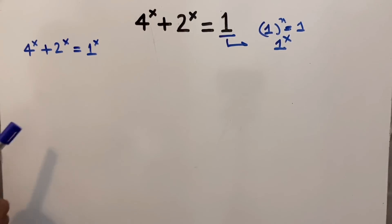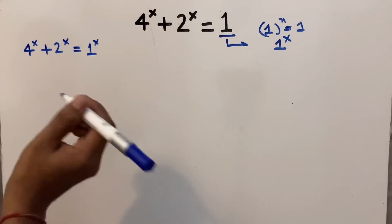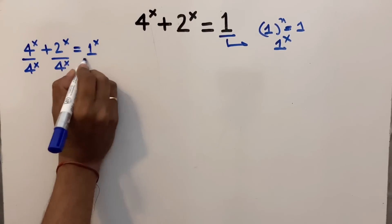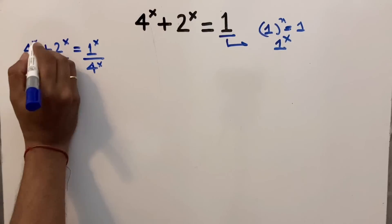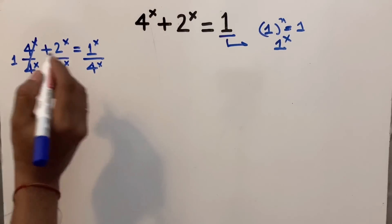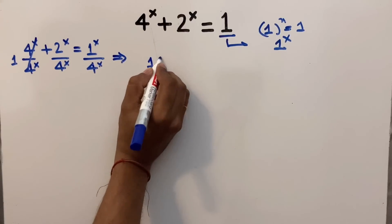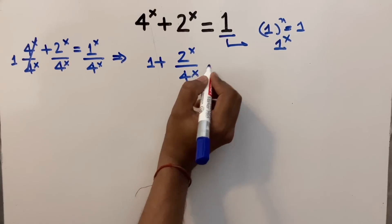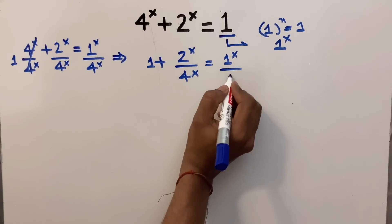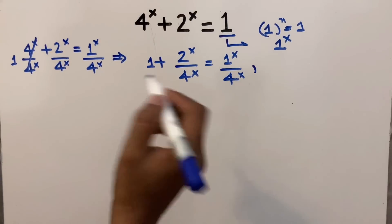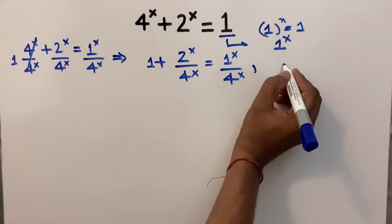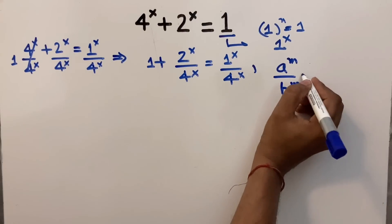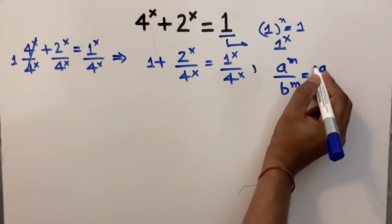To further simplify this equation, we will divide each term by 4 to the power x. Dividing each term by 4^x, the first term cancels to 1. So the equation simplifies to 1 plus 2^x divided by 4^x equals 1^x divided by 4^x. We also know the exponential rule which is a to the power m divided by b to the power m can be written as (a divided by b) to the power m.